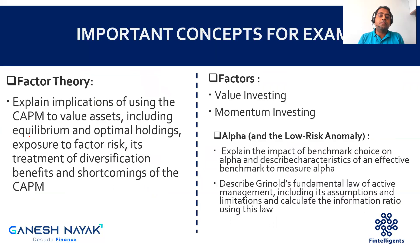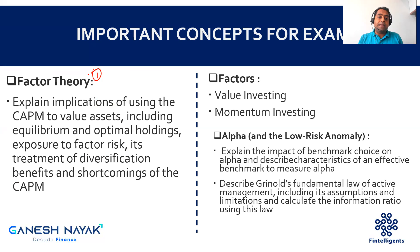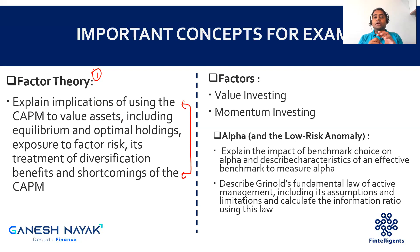Let me talk about the important concepts from each chapter. Chapter one is factor theory — a continuation of FRM Level 1, where we covered modern portfolio theory, capital allocation line, capital market line, and CAPM. This chapter focuses on why CAPM was a failure, what we can learn from it, and how risk and factors are explained. I've highlighted one learning objective giving the connection with CAPM logic, including its benefits and shortcomings — that is important for your exam.